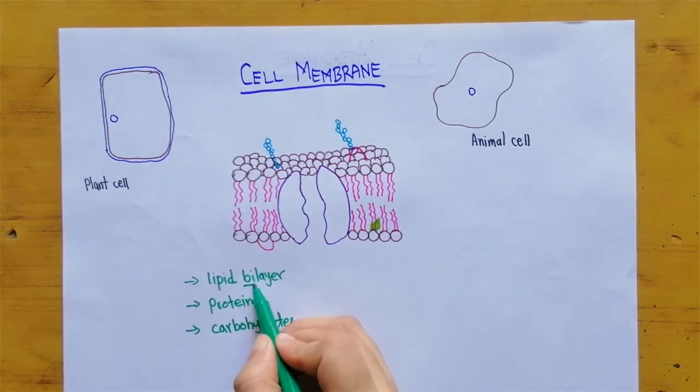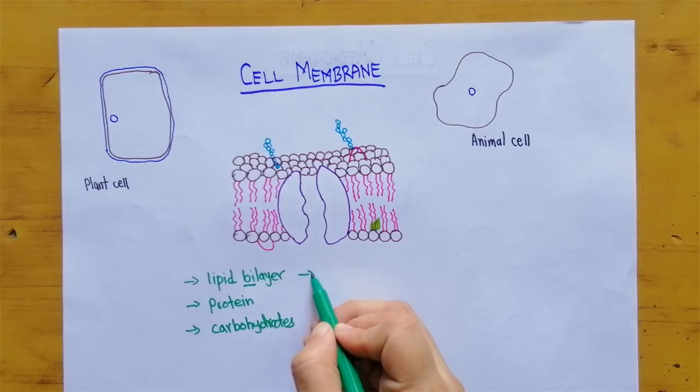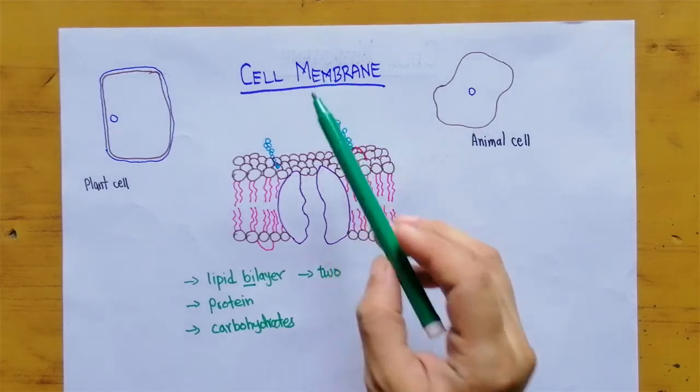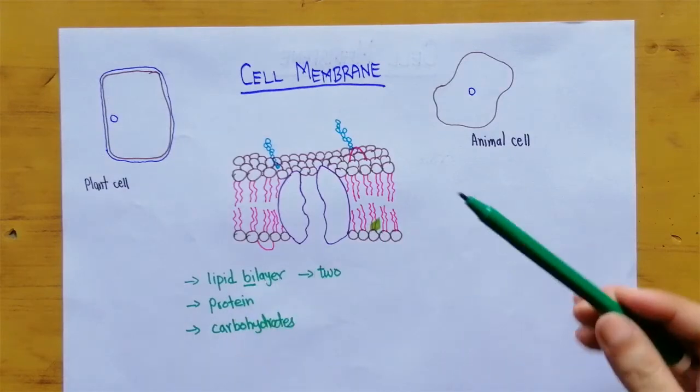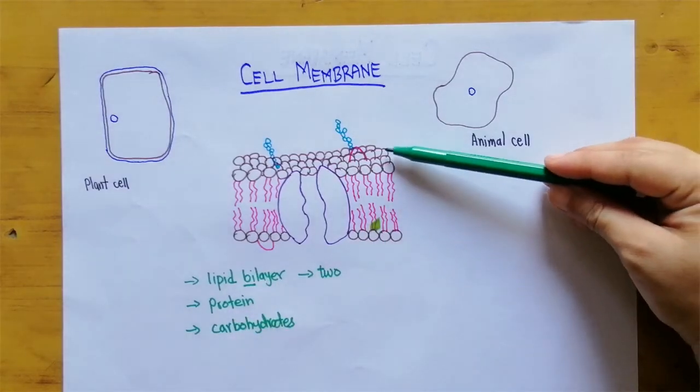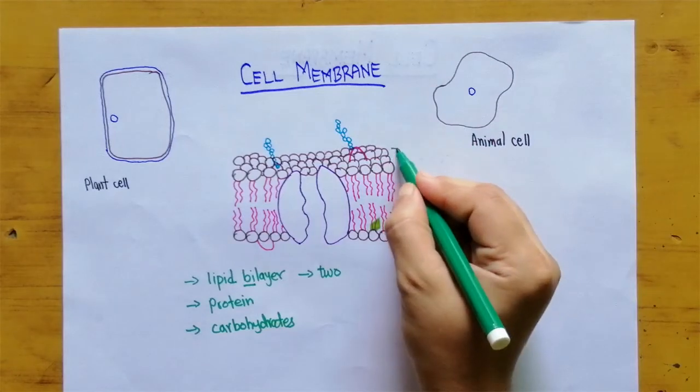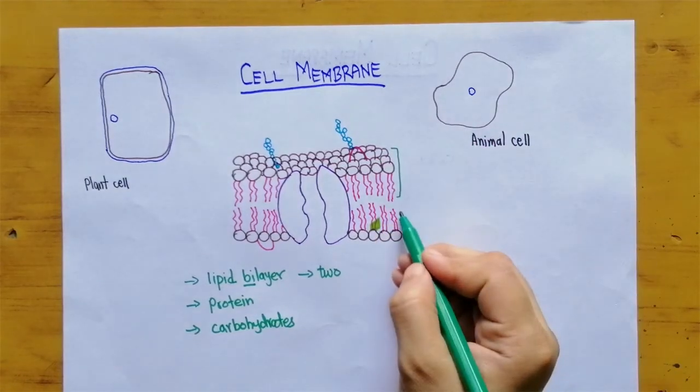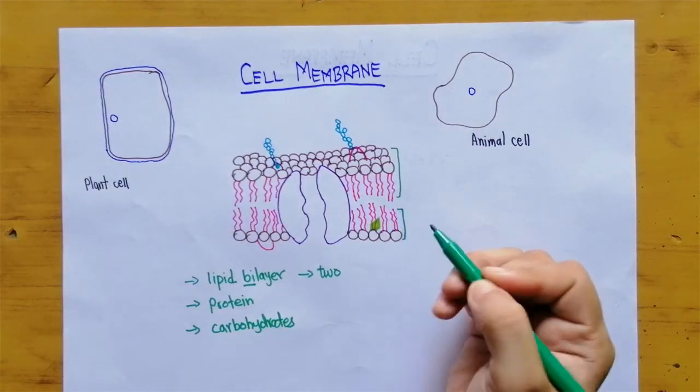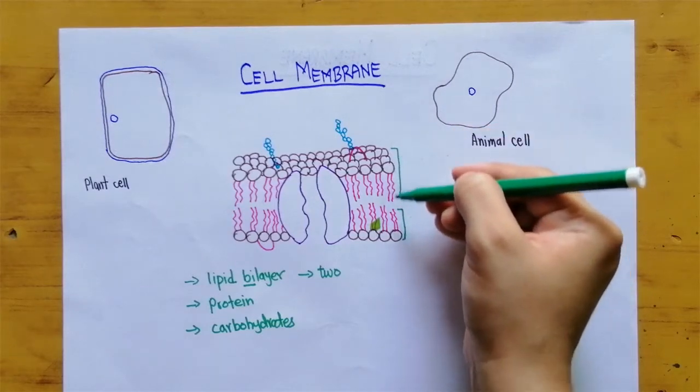Lipid bilayer means 2. It means that cell membrane is made up of 2 layers of lipid. Here in this model you can see that it is made up of 2. This is one layer of lipid. This is another layer of lipid. So this is lipid bilayer.